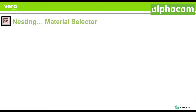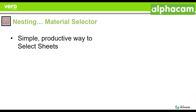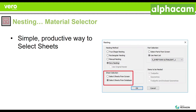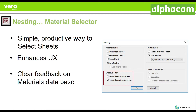We have also enhanced and created a new piece of software called the Material Selector. This is a simple and productive way to select your sheets. You will be able to trigger this by selecting the 'select sheets from database' option when you are creating your nesting. It enhances the user experience and gives you clear feedback on the materials that are available to you before you begin the optimization session.